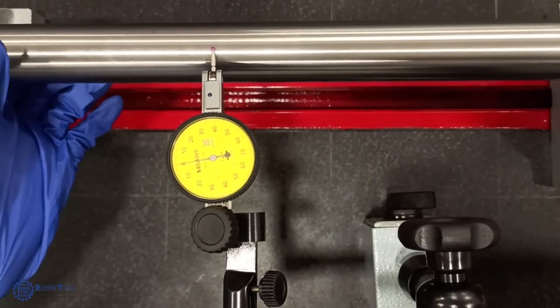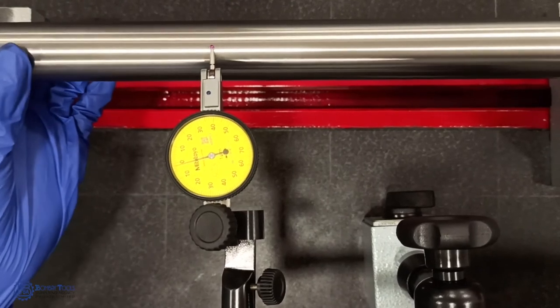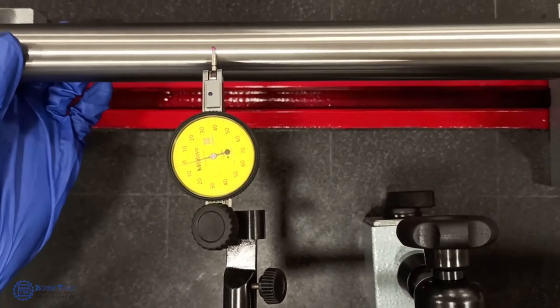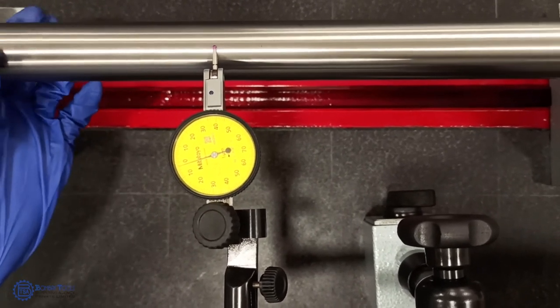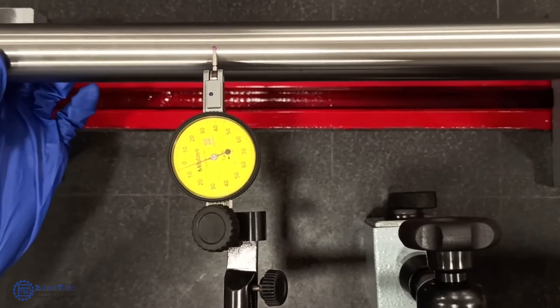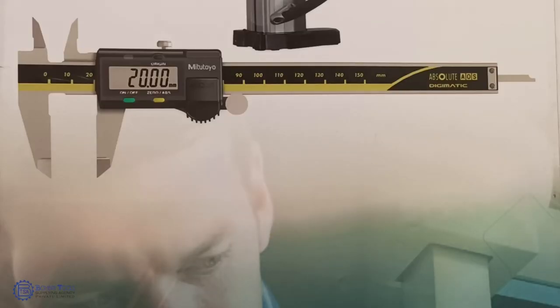Rotate the component and check for the run out error. Here it reads 4 microns. There are various types of lever dial gauges available.